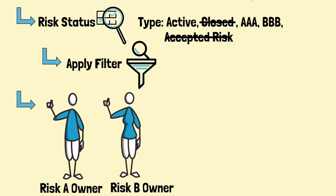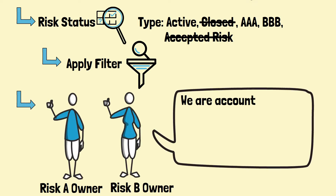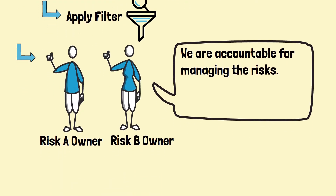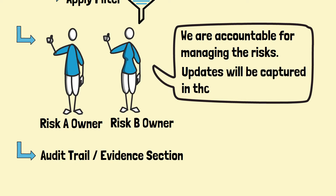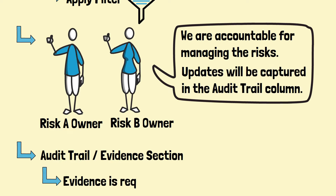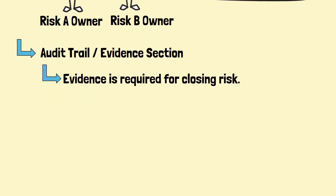There must be an owner for each risk. The risk owner is accountable for managing the risk. And there will be an audit trail section for the risk owner to update the changes of the risks. The narrative is essential, as it will provide the evidence when you plan to close the risk.